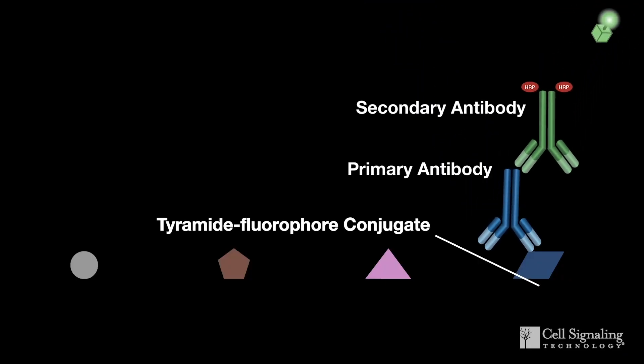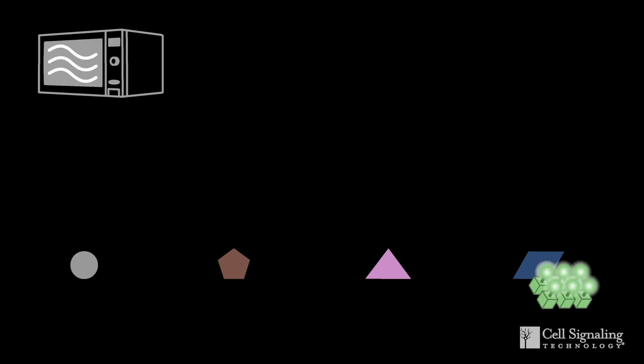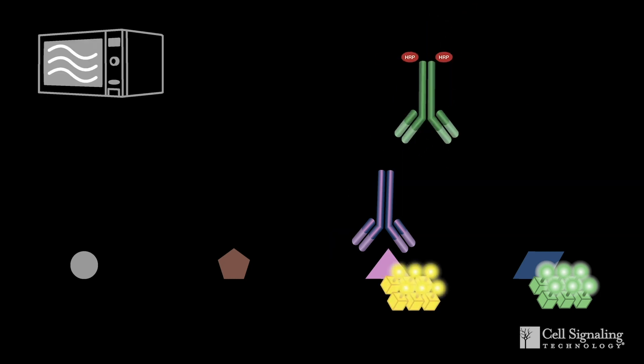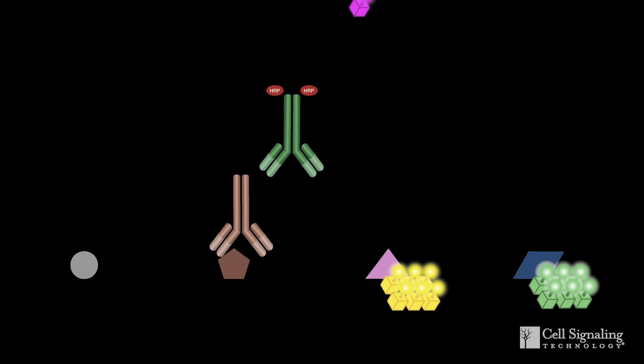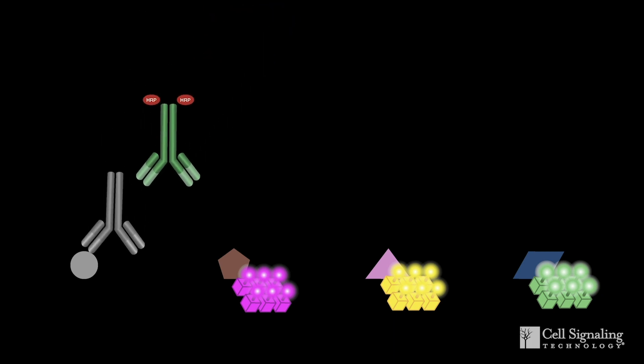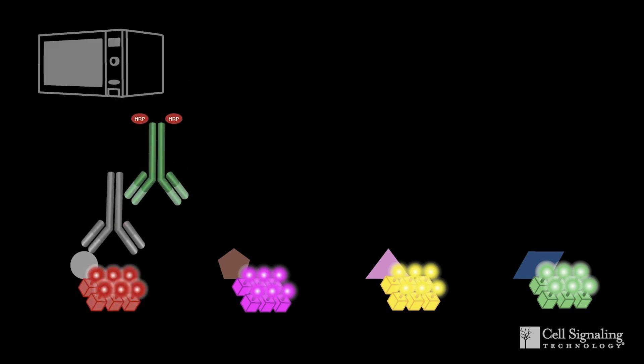We have developed a multiplex IHC protocol using tyramide fluorophore detection — we'll include a link to that protocol below this video. Our multiplex IHC protocol uses a serial labeling strategy. Each round of labeling includes steps for primary and secondary antibody incubation, followed by deposition of tyramide fluorophore conjugates. Then the antibodies are stripped or removed from the sample with heating in a microwave oven, while the deposited fluorophores remain covalently bound to the sample. Each labeling round incorporates a primary antibody for a different protein of interest paired with a different fluorophore, offering flexible experimental design plus the sensitive detection afforded by tyramide.